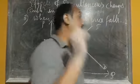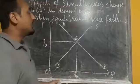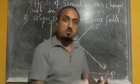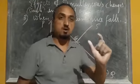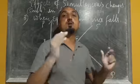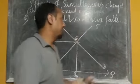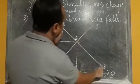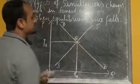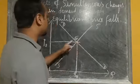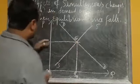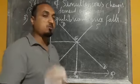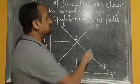Now we are going to discuss the third case. In the third case, we show what happens if supply changes by a greater amount and demand changes by a smaller amount. The initial supply curve is SS and initial demand curve is DD, both intersecting at point E. E is the equilibrium point, OP0 is the equilibrium price, and OQ0 is the equilibrium quantity.